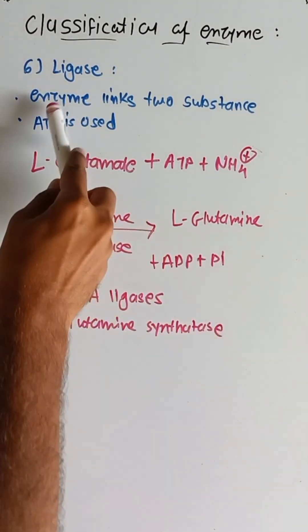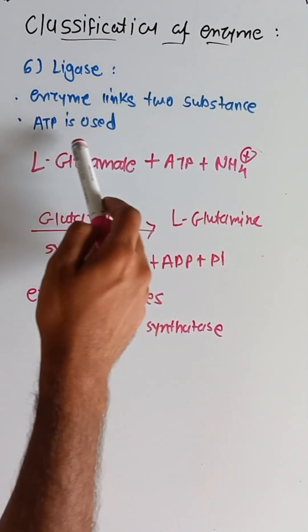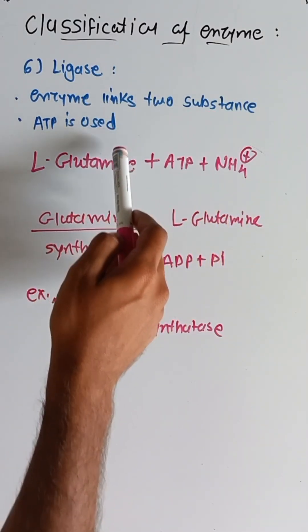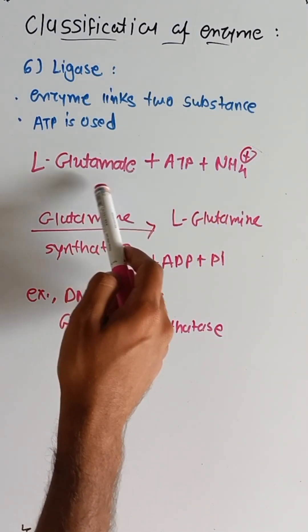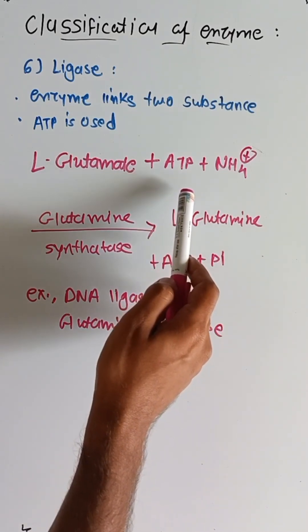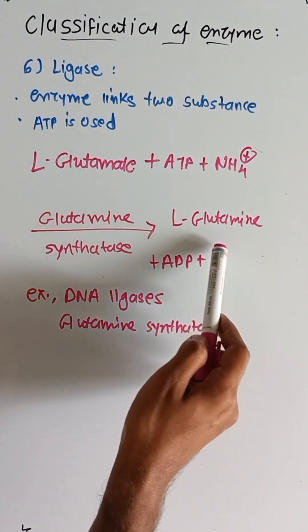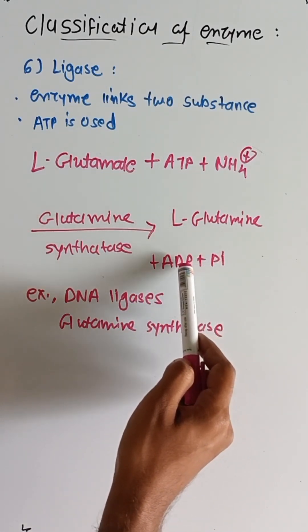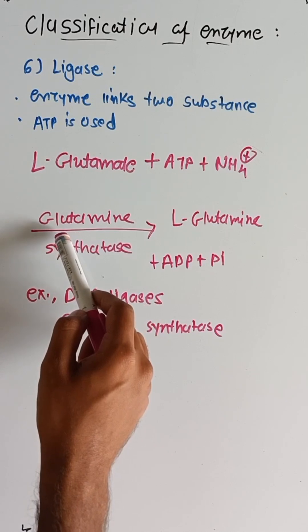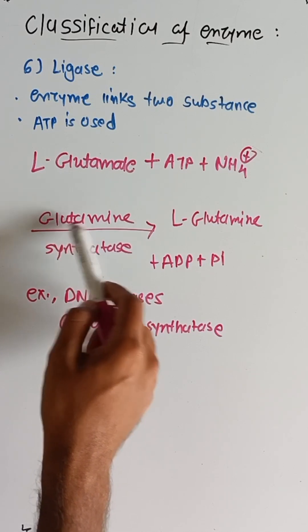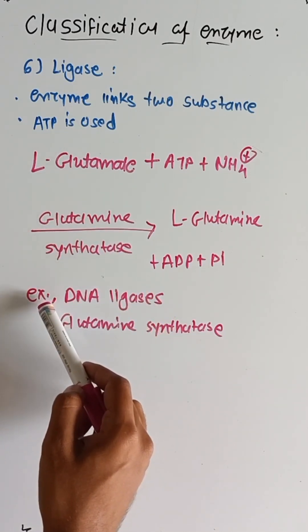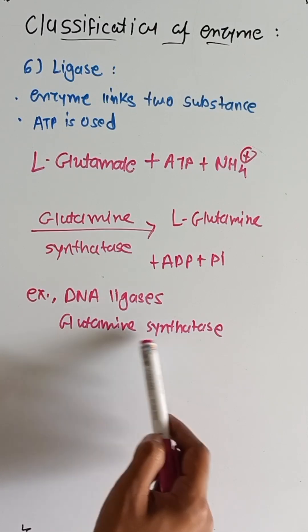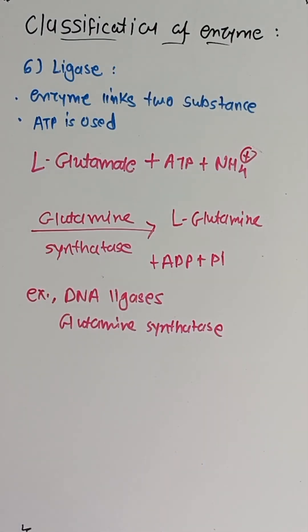The sixth and last class is ligases — enzymes that link two substances together using ATP. For example, L-glutamate in the presence of ATP and NH4+ is converted into L-glutamine, ADP, and phosphate, using glutamine synthetase. Examples of ligases are DNA ligase and glutamine synthetase. This completes the classification of enzymes.